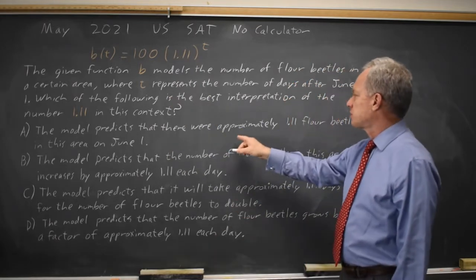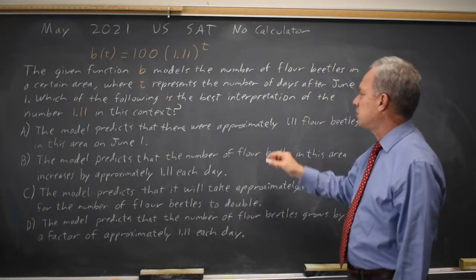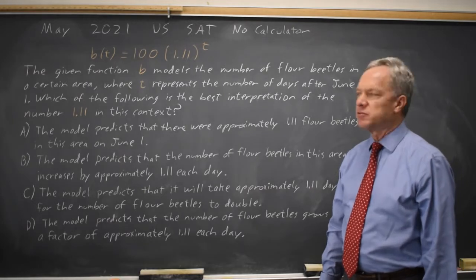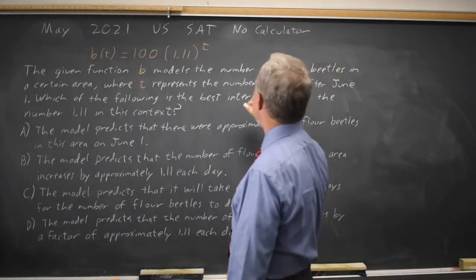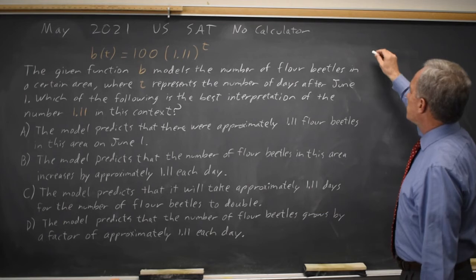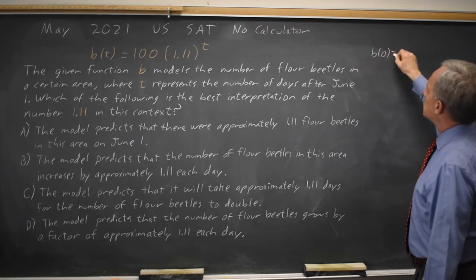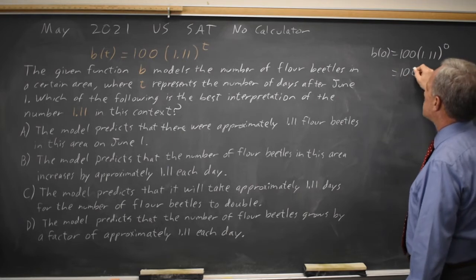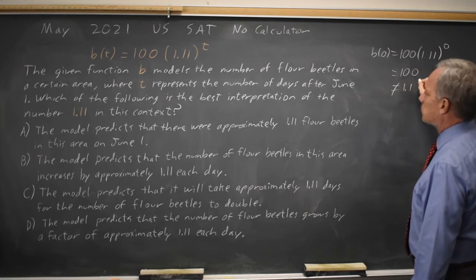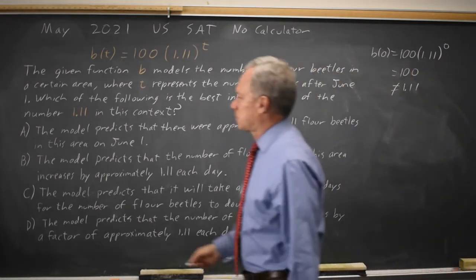Choice A says the model predicts there are approximately 1.11 flower beetles in this area on June 1st. June 1st is T equals zero days after June 1st, but B(0) equals 100 times 1.11 to the zero equals 100, which is not 1.11, so choice A is not correct.